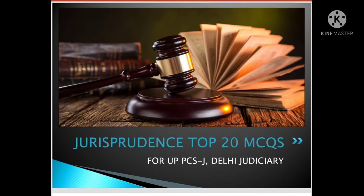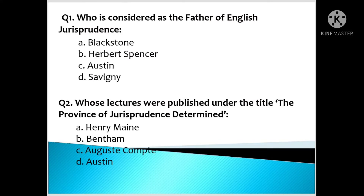Question number 1: Who is considered the father of English jurisprudence? Question number 2: Whose lectures were published under the title 'The Province of Jurisprudence Determined'? A. Henry Maine, B. Bentham, C. Auguste Comte, D. Austin. The correct option is Austin.